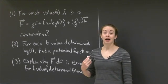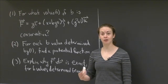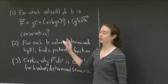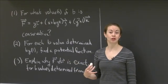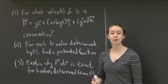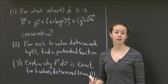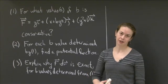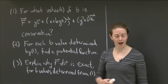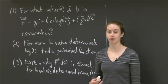Welcome back. We're interested in doing three things with this vector field. The first is to find the values of b that make the vector field conservative. As we know from lecture, I need to find the curl of F. The curl of F measures how far F is from being conservative — if the curl of F is 0, then F is conservative.